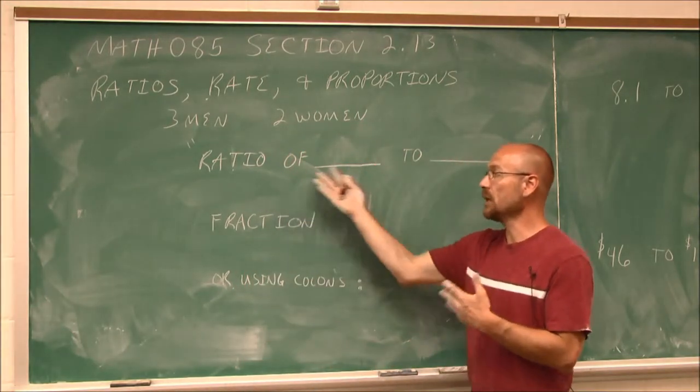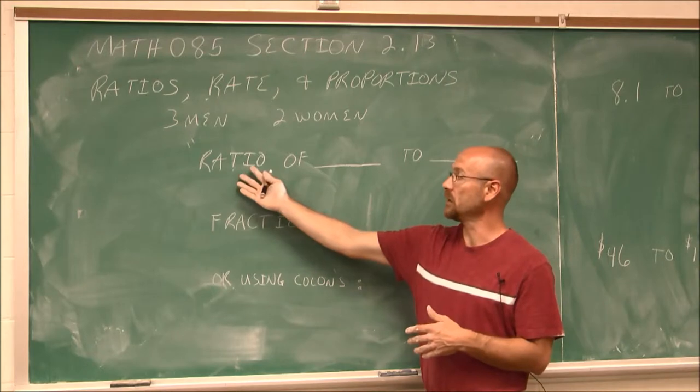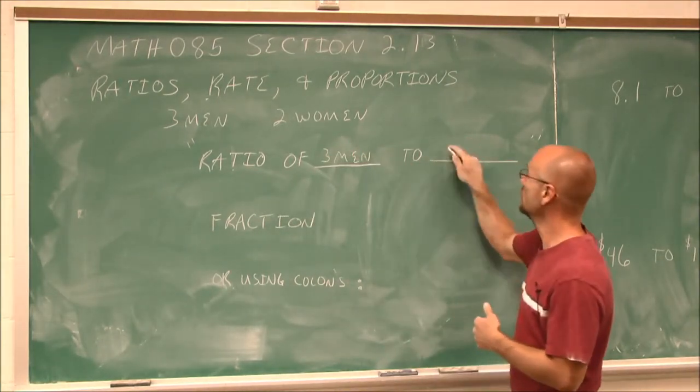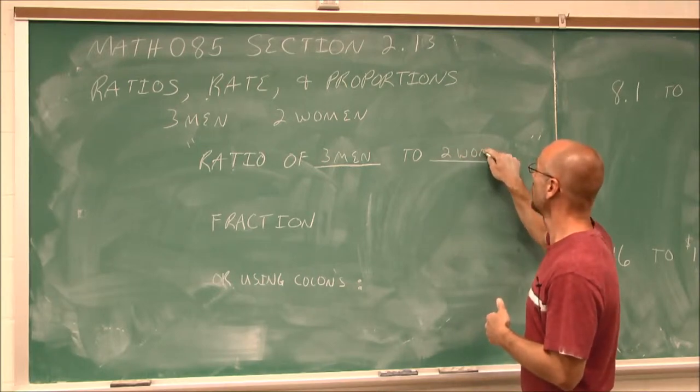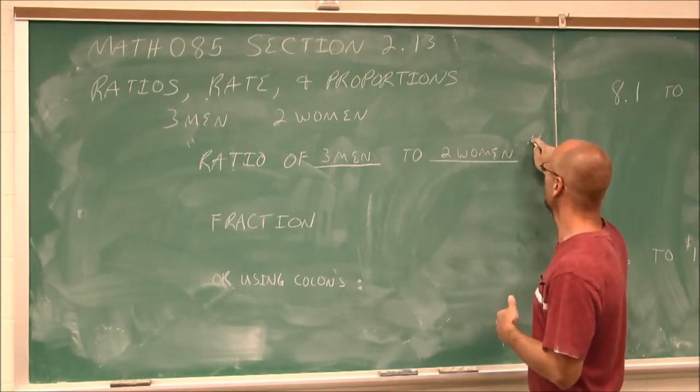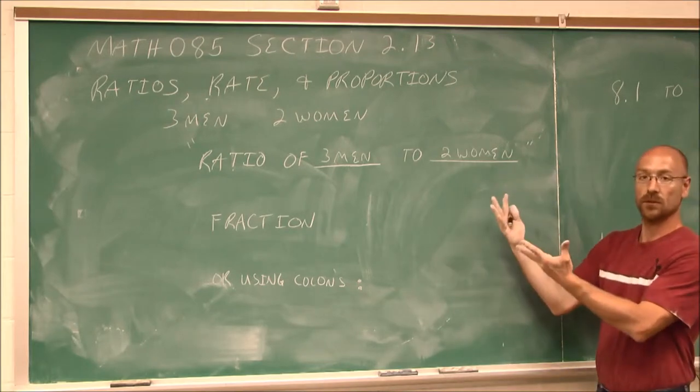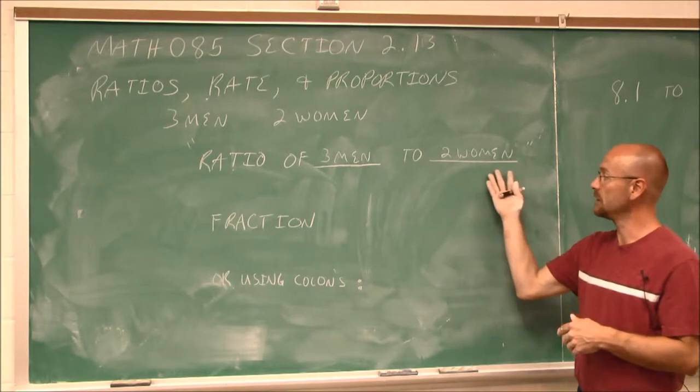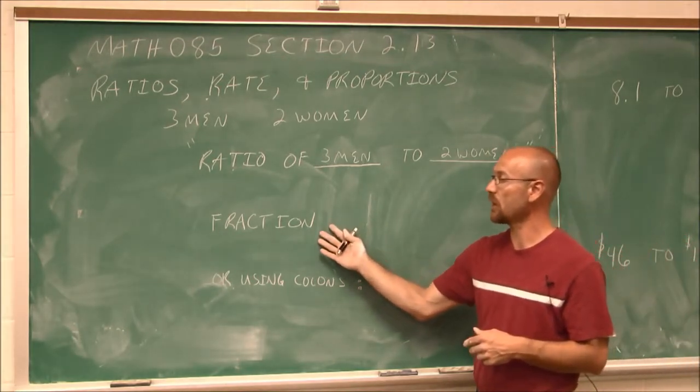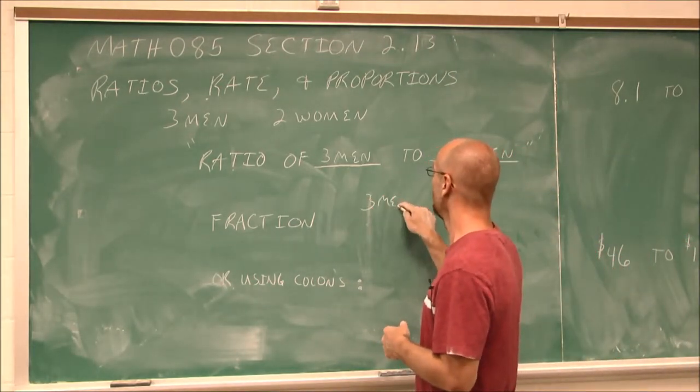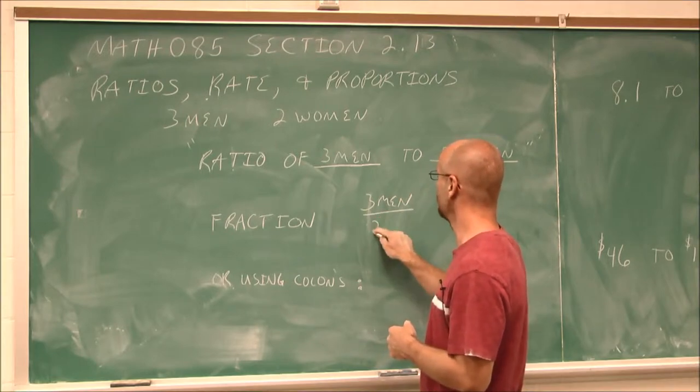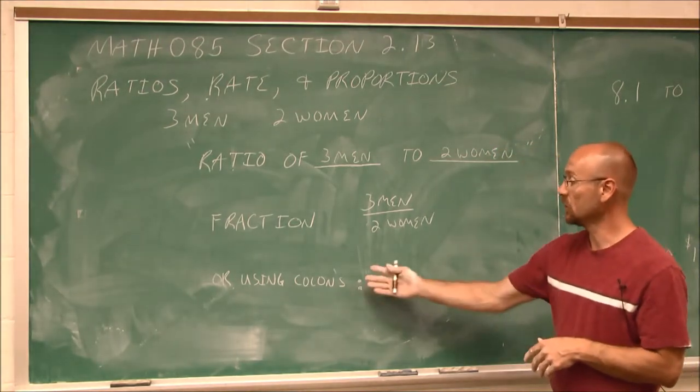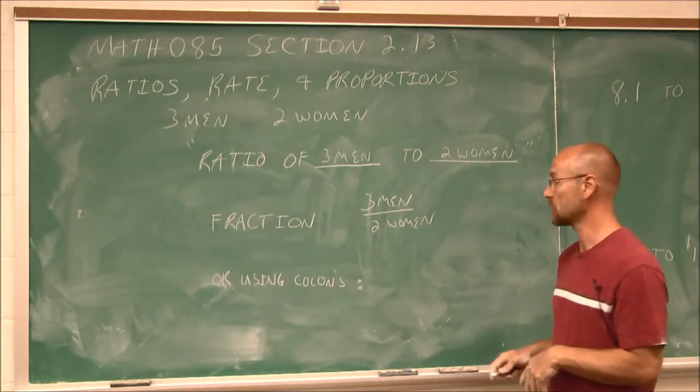And how we read a ratio is, we'd say, a ratio of three men to two women. And that's how we would read a ratio. Now, we can also represent a ratio not only in the English language, but we can do it in a fraction. We can say that there are three men for every two women in my home.